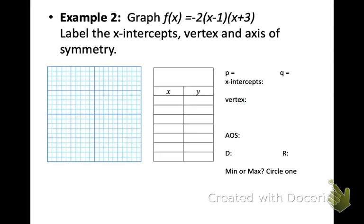So let's look at another one. Let's anticipate with that negative 2. So we'll have a reflection, and it'll be narrow. Let's pick out our p and q values. So we have positive 1 and negative 3, because we're taking opposite signs. And then we're writing them as points, right on the x-axis, so 1, 0, negative 3, 0.